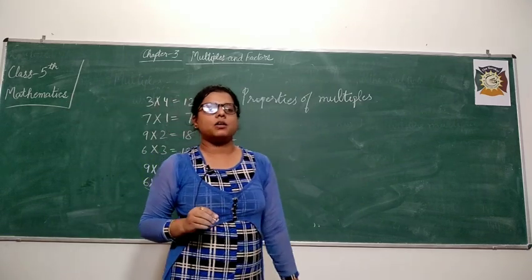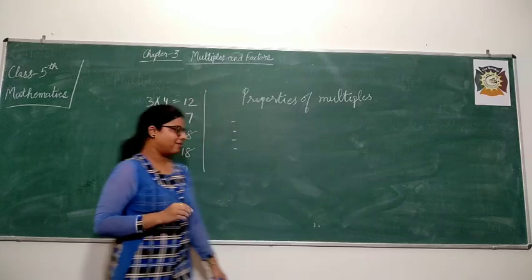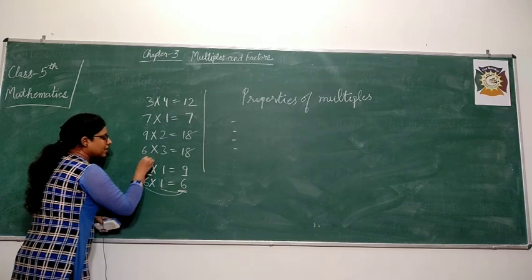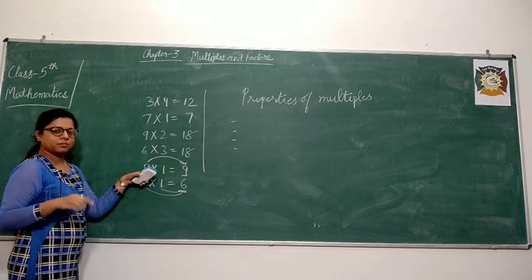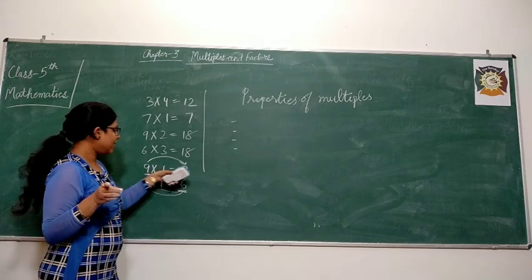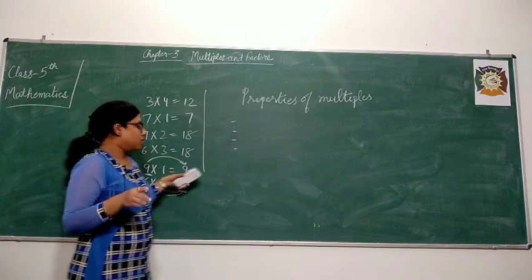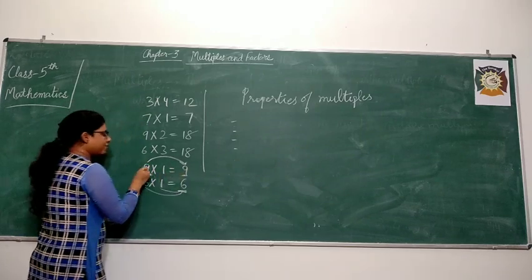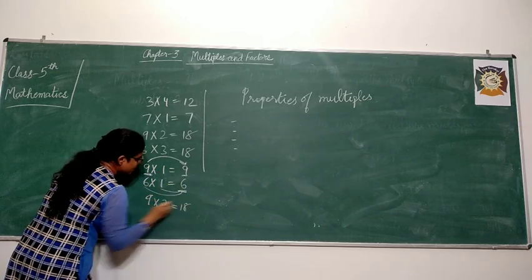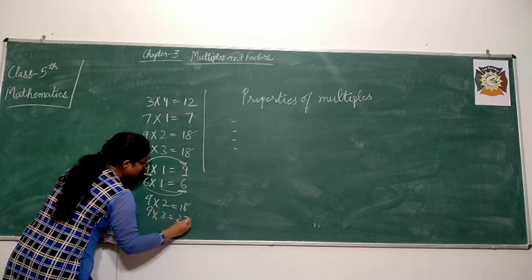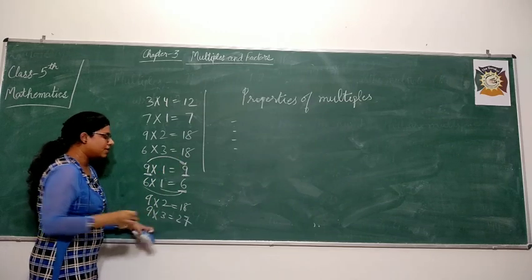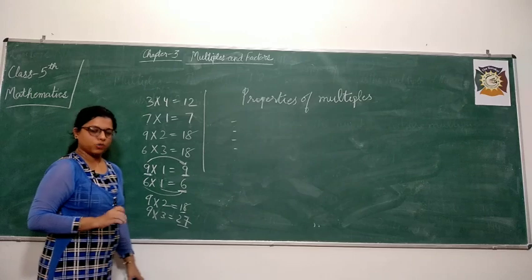Next property: the smallest multiple of a number is the number itself. For example, the smallest multiple of 9 is 9. If you take 9 multiplied by 2 that will be 18, but 9 is smaller than 18. So the first multiple of a number is the number itself: 9 multiplied by 1 is 9; 9 multiplied by 2 is 18; 9 multiplied by 3 is 27. So the smallest multiple of a number is the number itself, and after that all the multiples are greater than the number.